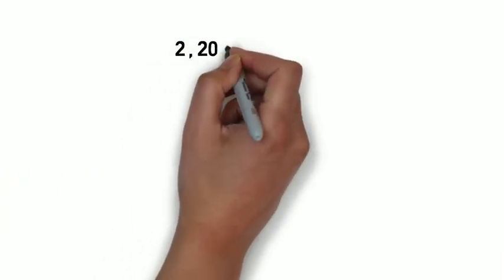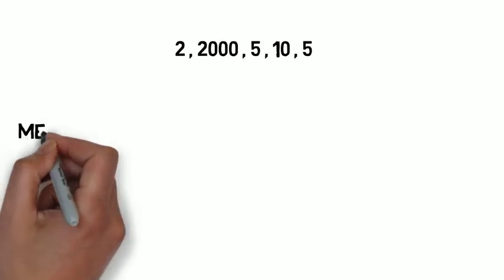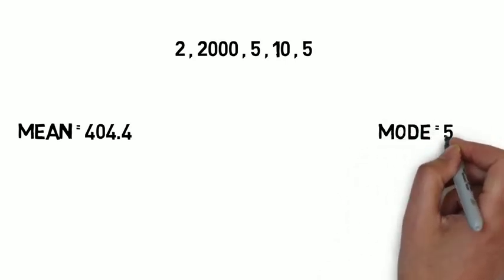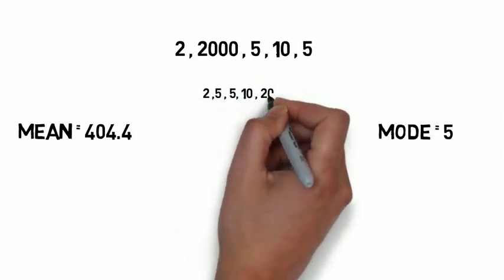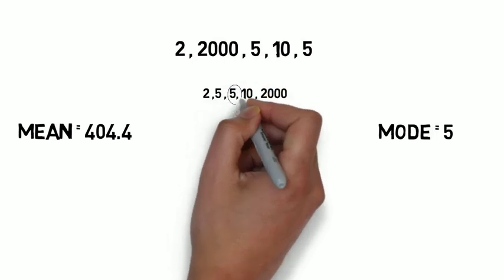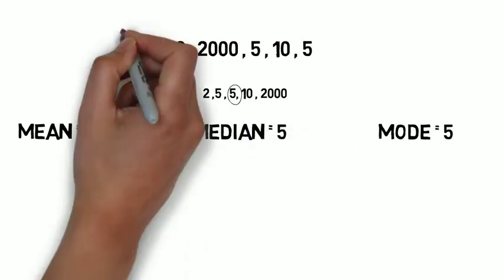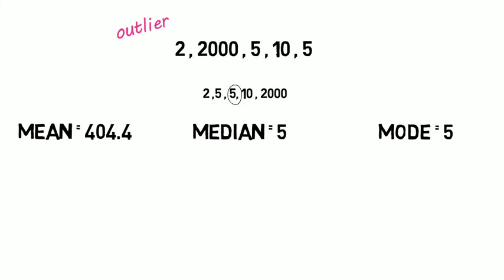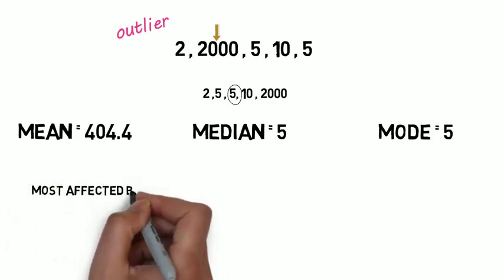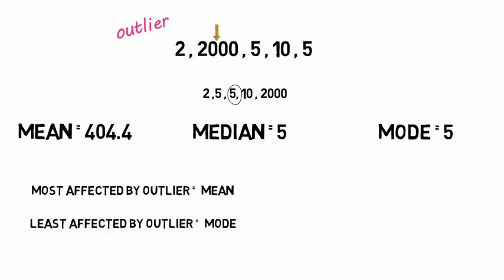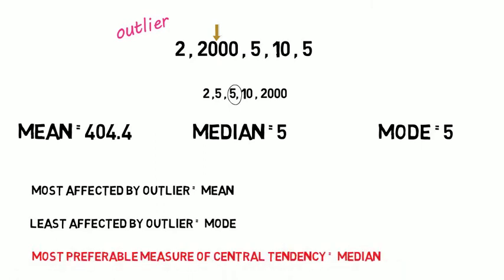If I give you a set of numbers 2, 2000, 5, 10, 5 — the mean of these 5 numbers will be 404, the mode will be 5 since 5 is repeated twice, and the median will also be 5. An outlier is a value that is totally different from the rest of the values. Here the outlier is 2000. The measure most susceptible to an outlier is the mean, the one least affected is the mode. So the most preferred measure of central tendency is the median.